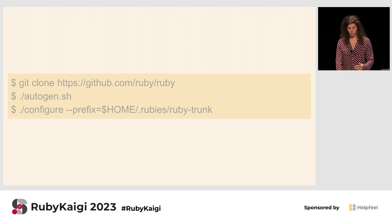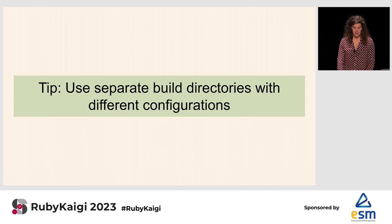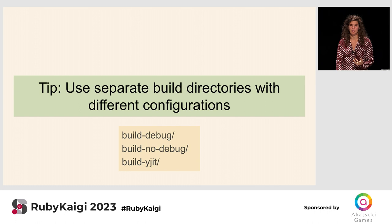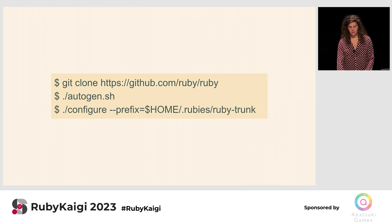You set those environment variables within the configure line itself. One tip: it's helpful to use separate build directories with different configurations — you might want a debug build, a non-debug build, and a YJIT build simultaneously. Anything with the build prefix gets git-ignored. Right between the autogen and configure steps, you can make a new directory, CD into it, and run configure within that directory to keep all builds isolated from each other.